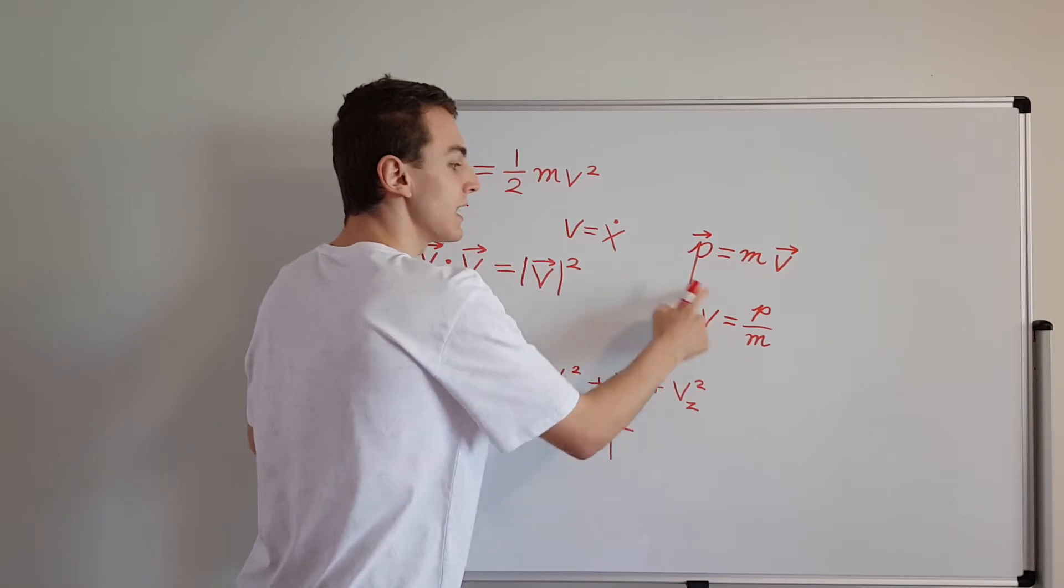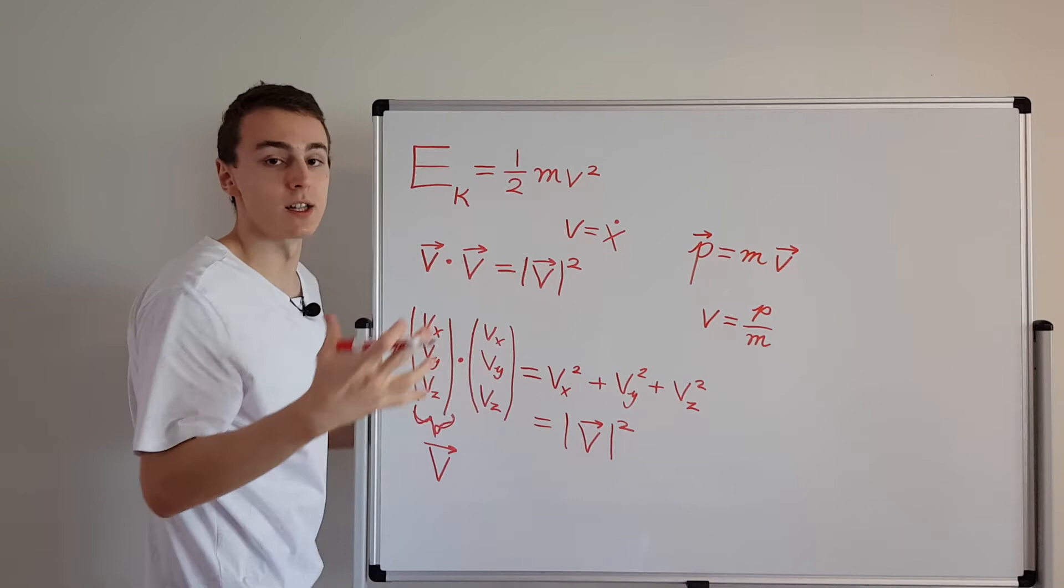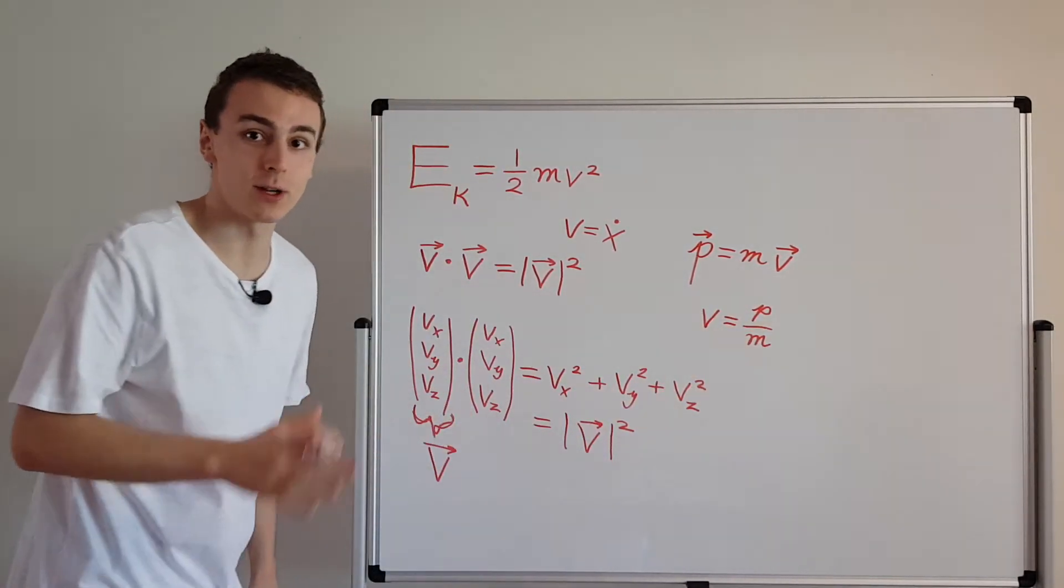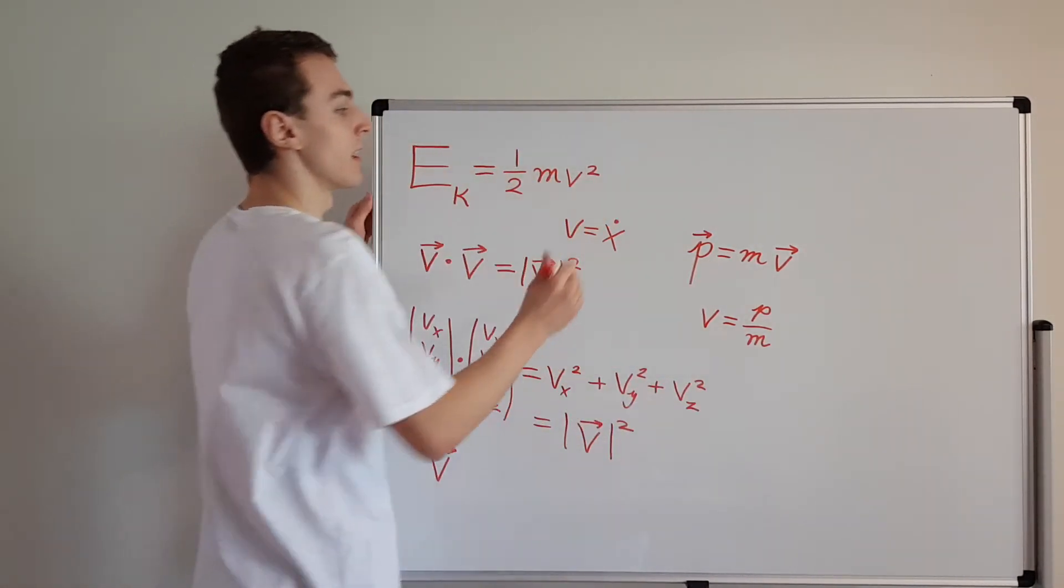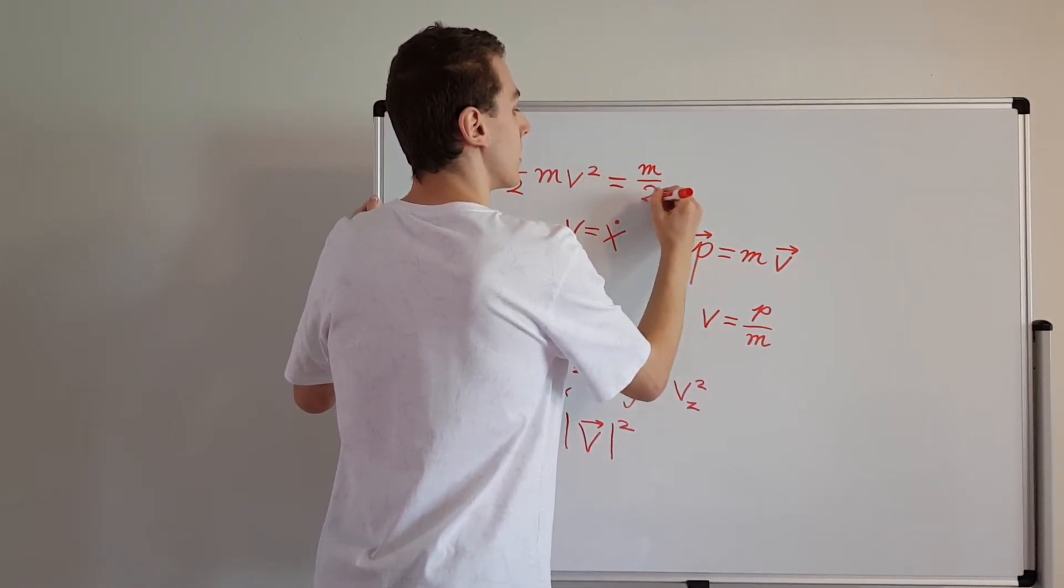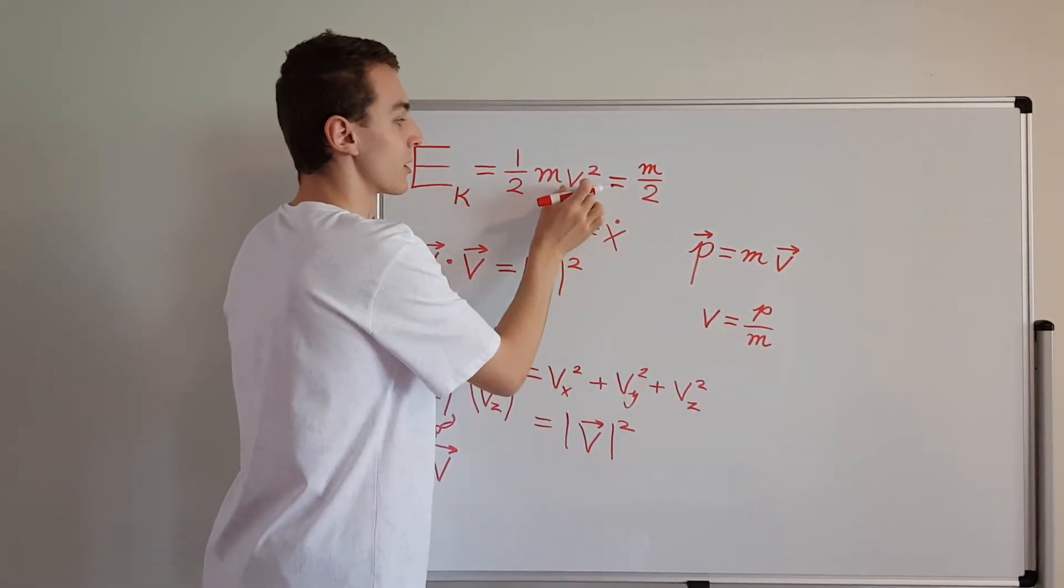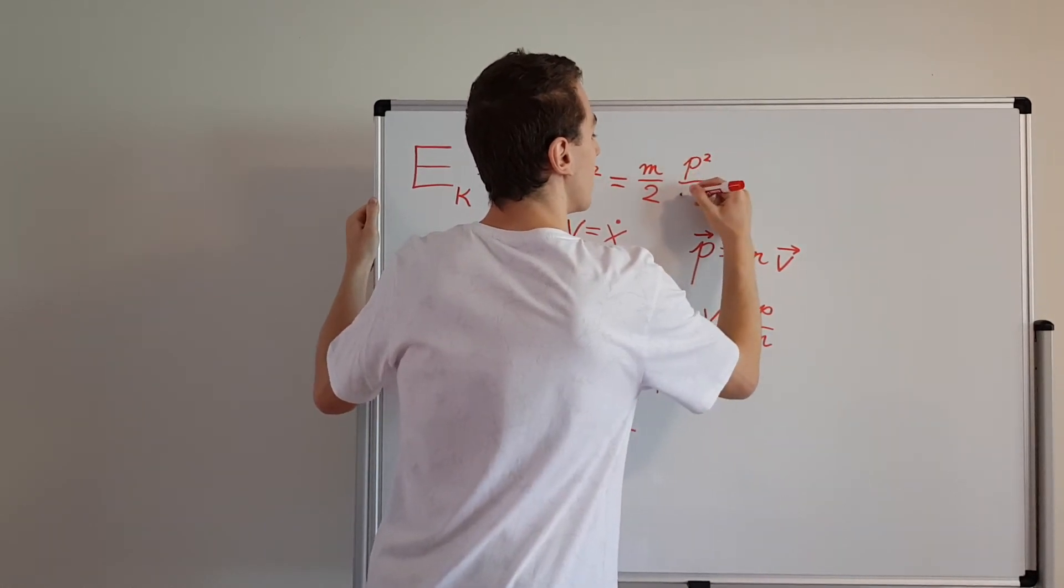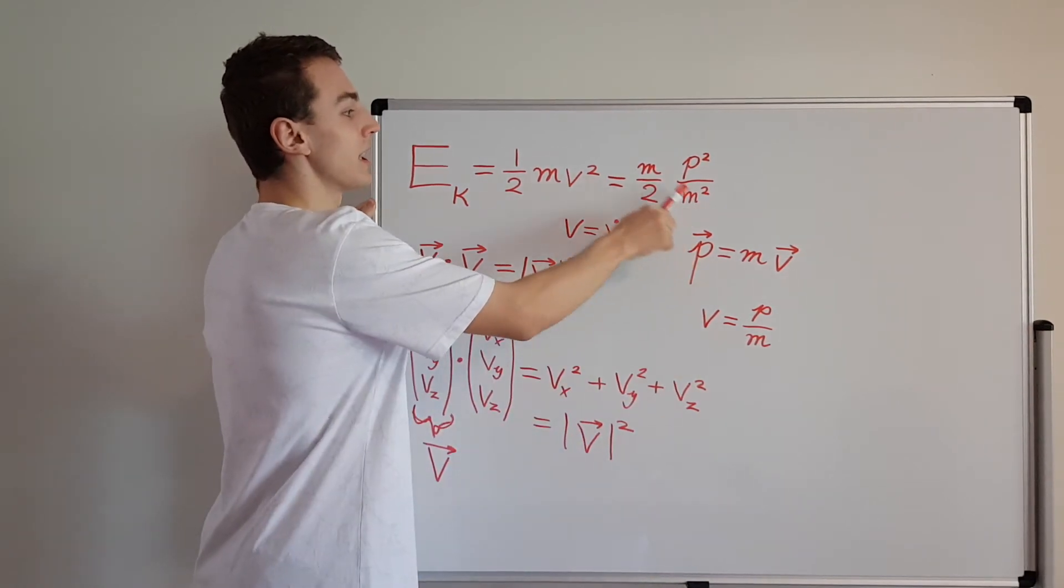This relationship appears very frequently if you've done Lagrangian or Hamiltonian mechanics. We're going to substitute this into this expression. That's going to give us m over 2, that's just this factor at the front, and then we have to square this. If we square this, because we have v squared, we're going to get p squared over m squared.